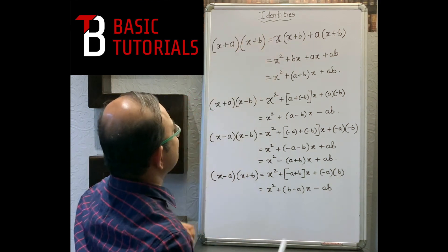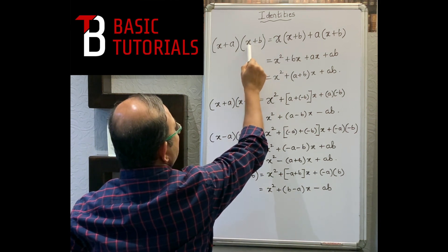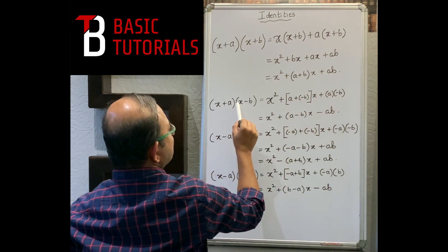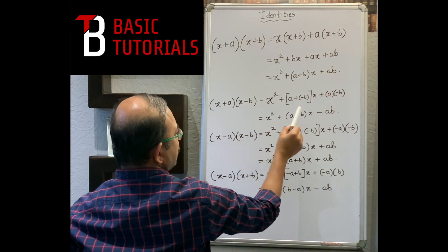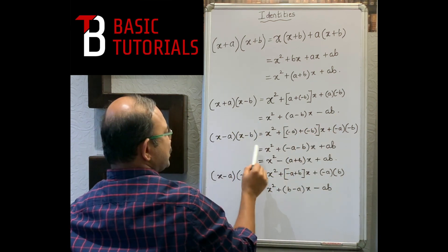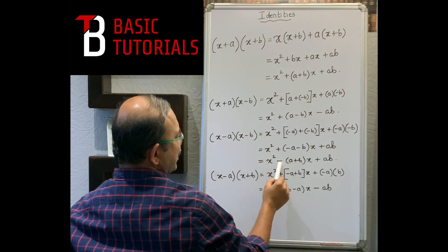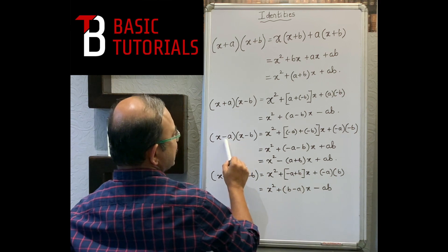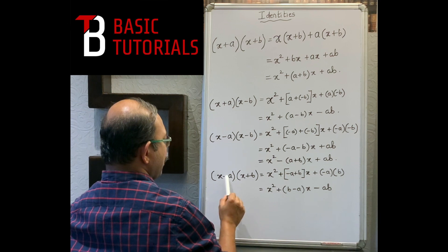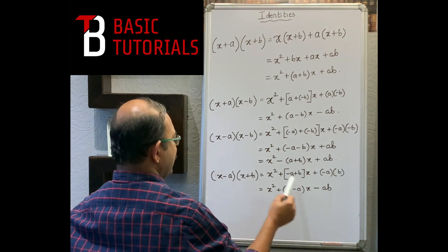In summary, doing it directly: (x+a)(x+b) = x² + (a+b)x + ab; (x+a)(x-b) = x² + (a-b)x - ab; (x-a)(x-b) = x² - (a+b)x + ab; and (x-a)(x+b) = x² + (b-a)x - ab.